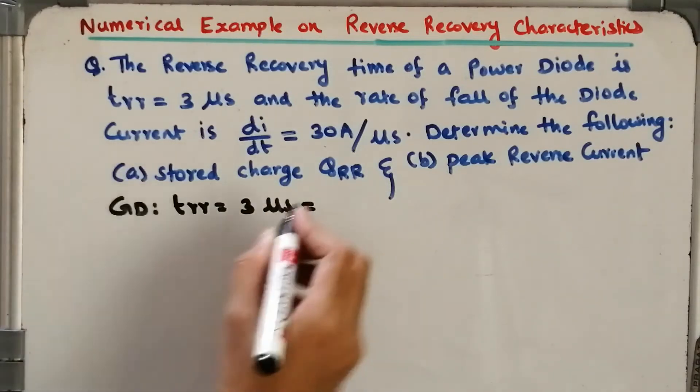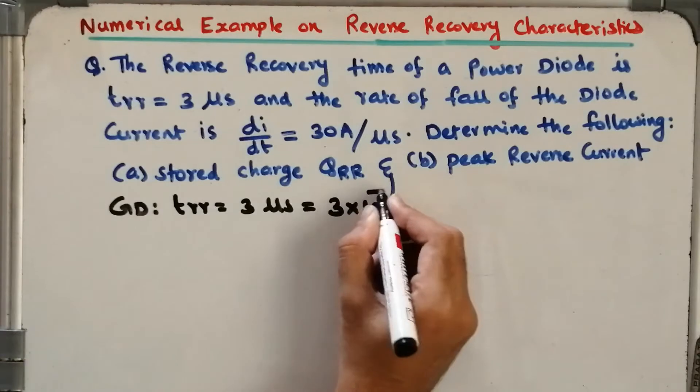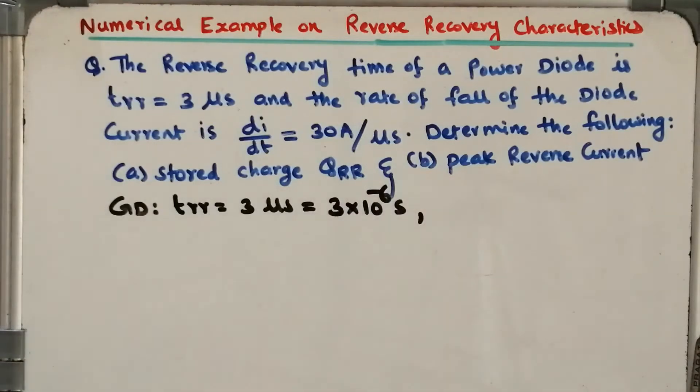And dI/dt is equal to 30 Ampere per microsecond, so dI/dt equals 30 Ampere per 1 times 10 to the power minus 6 seconds.